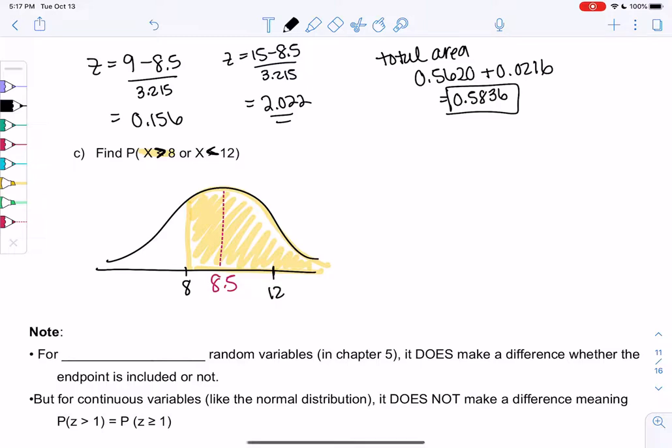So 12 is over here. Less than 12 will be the left side. And then or means either or. So I'm just going to add all the pieces.